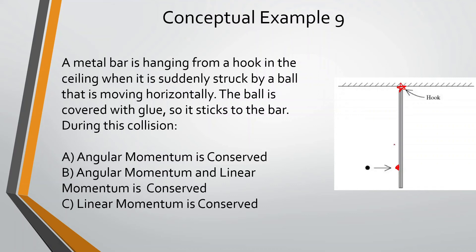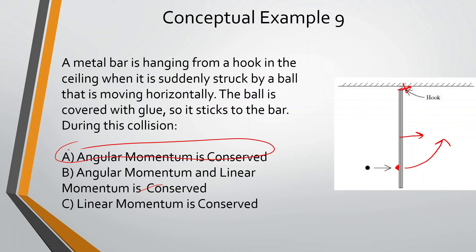During the collision: A) angular momentum is conserved, B) angular momentum and linear momentum are both conserved, C) linear momentum is conserved. Usually in a collision, both are conserved. However, in this case, the bar can rotate but it can't move linearly because it's attached to the hook on the wall. Since there's a force preventing linear motion, linear momentum is not conserved. So only angular momentum is conserved.